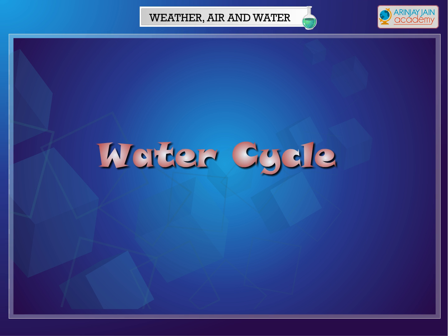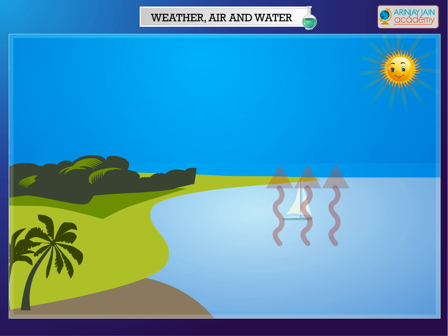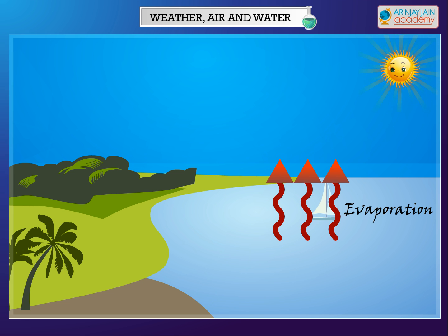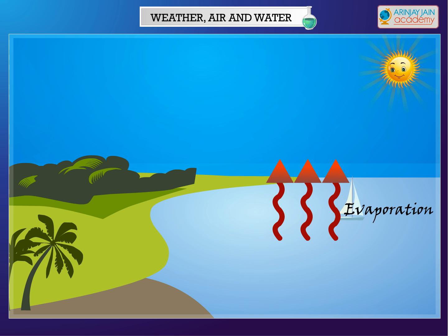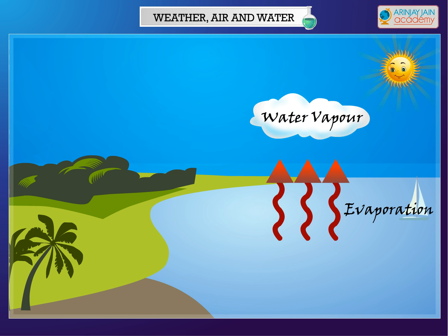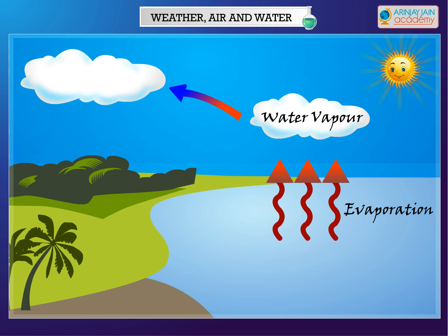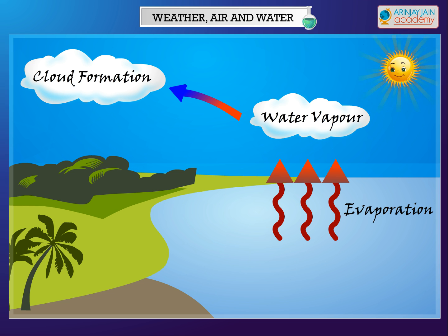Let's study the water cycle. When the sun shines, water from ponds, rivers, lakes, seas etc. evaporates and changes into water vapor. In the sky, it condenses to form small drops of water. These small drops join together to form clouds.